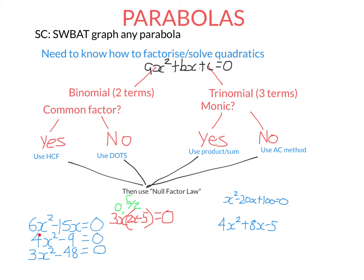Let's look at this next one: 4x-squared minus 9 equals zero. We ask ourselves: do these two terms share a common factor? No, they actually don't. So it's probably going to be difference of two squares.